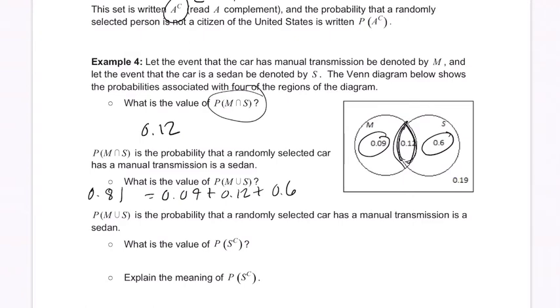The probability of a manual or a sedan is the probability that a random car has a manual transmission or is a sedan. They're just telling you what this means. What is the value of the probability of the complement of a sedan?